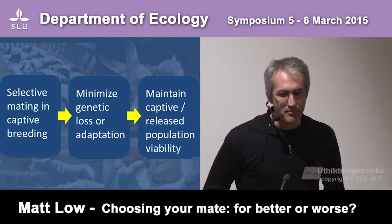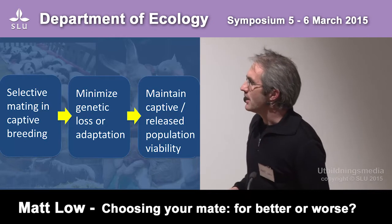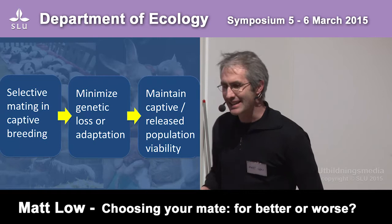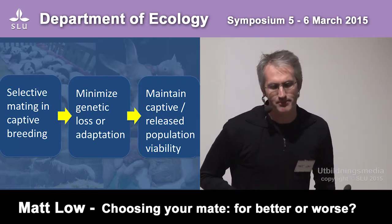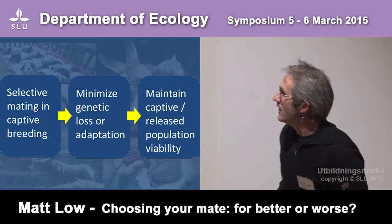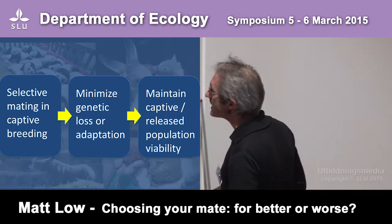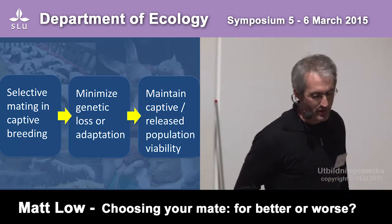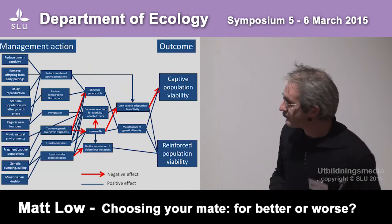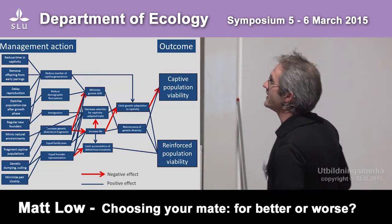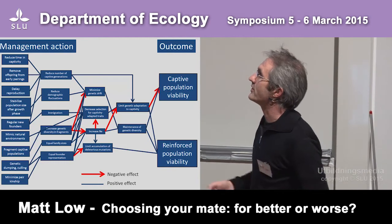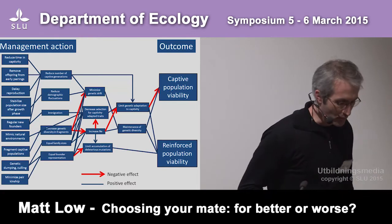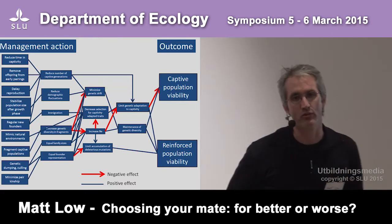So managers employ ways to minimise these problems by looking at selective mating of individuals in captivity. Now this diagram here looks all very nice and neat, but in reality it looks like this. Red lines are negative effects, blue lines are positive effects, and the link between the management actions and the outcomes you're looking for are complex and not necessarily going in the directions that you want.